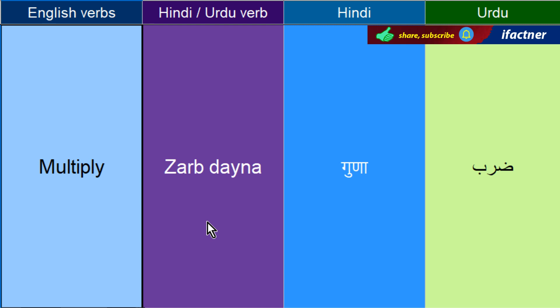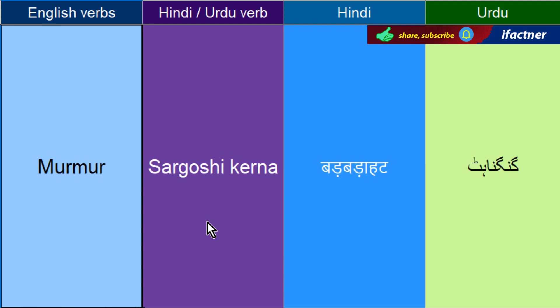Zurb dayna — Multiply kerna. Multiply these two numbers — in do numbron ko multiply kero, zurb do. Sargooshi kerne ko kehengay — Murmur. Why are you murmuring? — aap sargooshi kyun keh rahe hai? Aur basically murmuring jo hai na, jis tarah koyi boli isa — aapko us ki baat samajh nahe hai, to us ko murmuring kehtay hai.